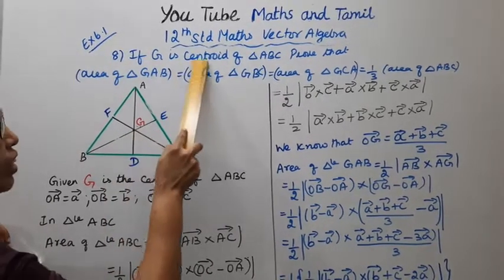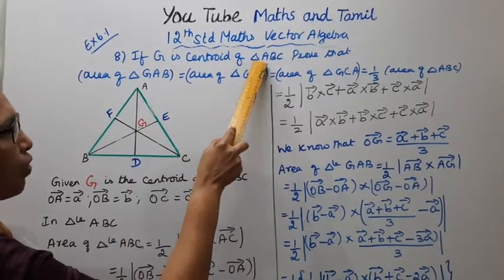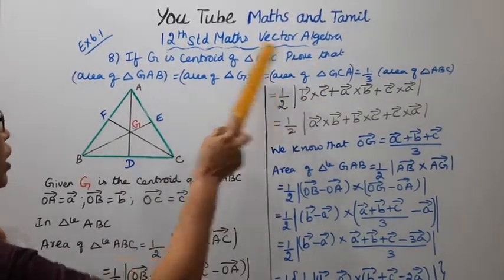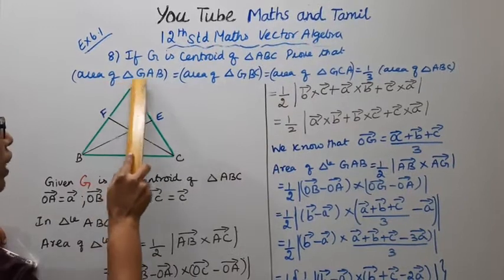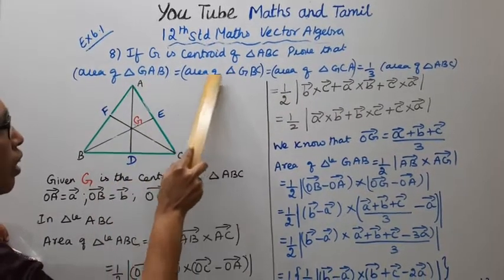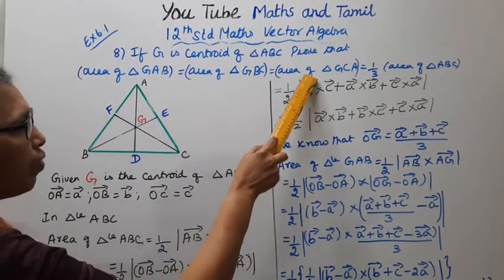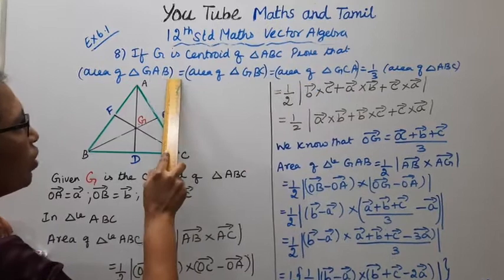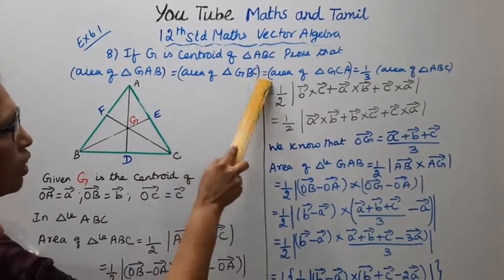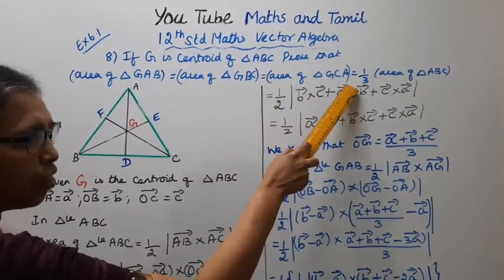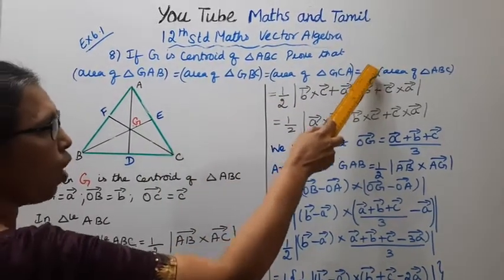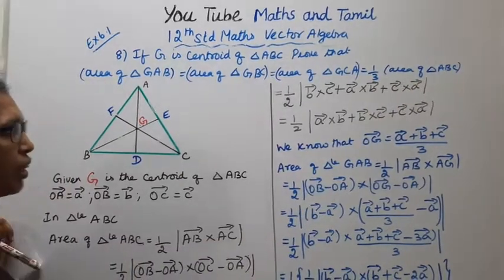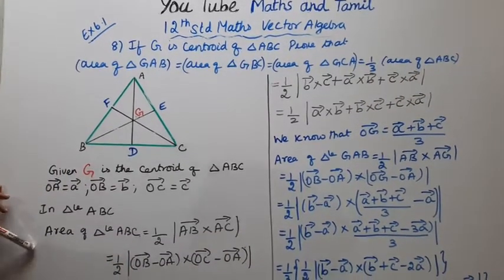If G is a centroid of triangle ABC, prove that the area of triangle GAB equals the area of triangle GBC equals the area of triangle GCA, and that each is equal to one-third the area of triangle ABC.